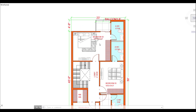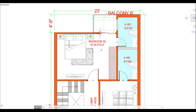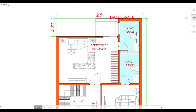Let's go to the back side first. You will see that I have a bedroom here with an attached washroom. Bedroom number 2 is 15 feet 10.5 inches by 12 feet. The attached bathroom is 5 feet 3 inches by 8 feet.